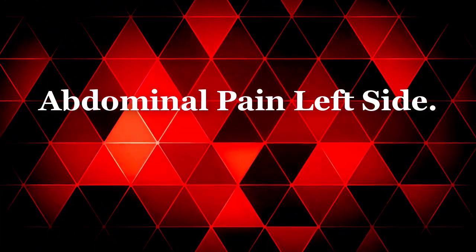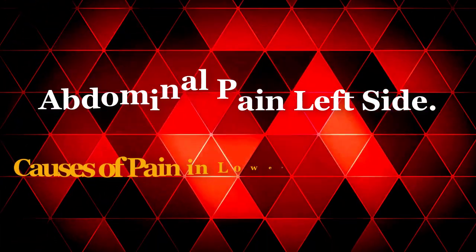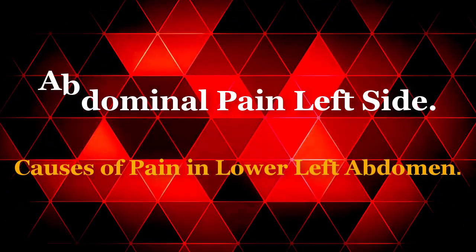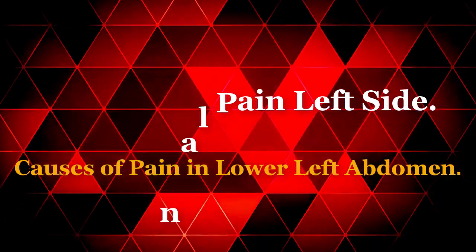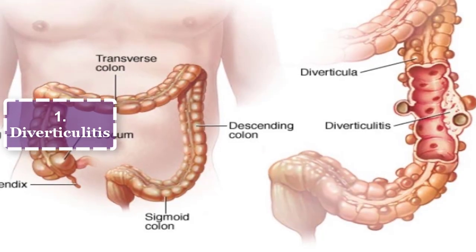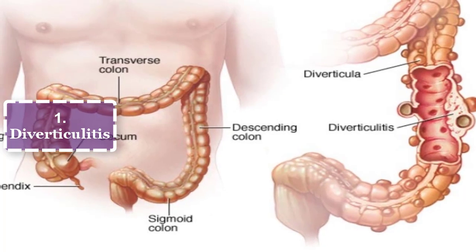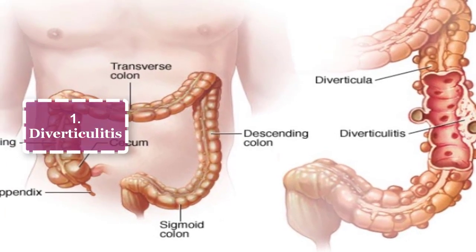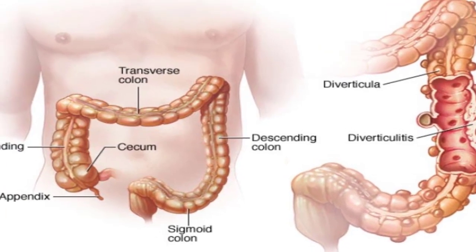Abdominal Pain Left Side: Causes of Pain in Lower Left Abdomen. 1. Diverticulitis — Diverticulitis is one of the most common causes.